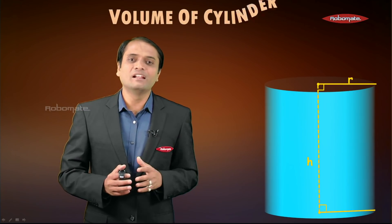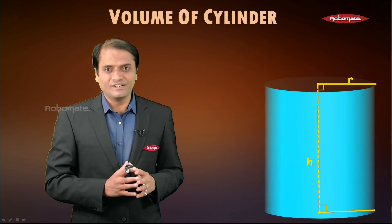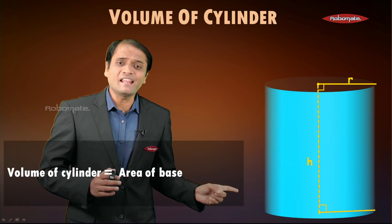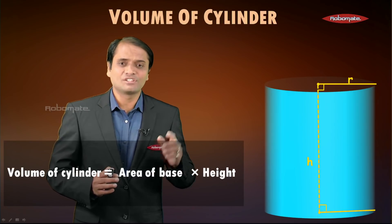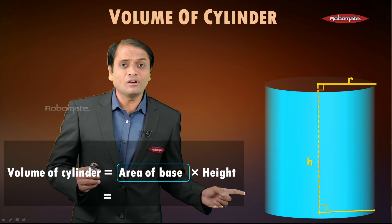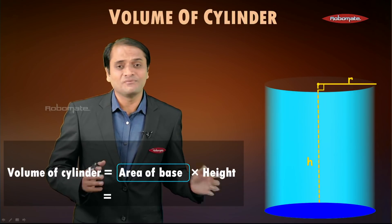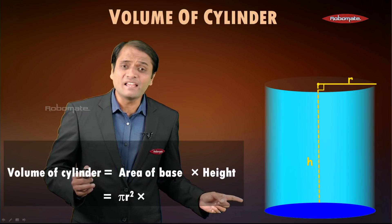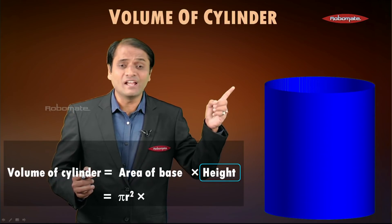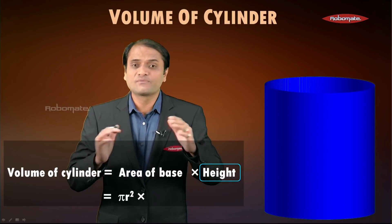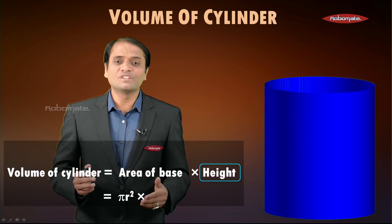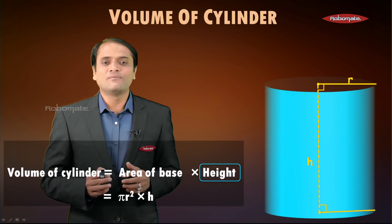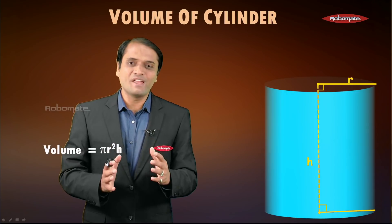Now let us find the volume of the cylinder. The formula for volume is area of the base multiplied by height. Since the base is a circle, its area is πr². Multiplying by height h, the formula for the volume of a cylinder is πr²h.